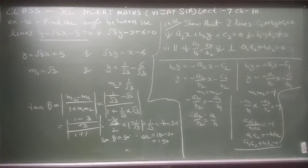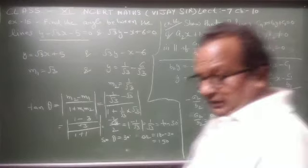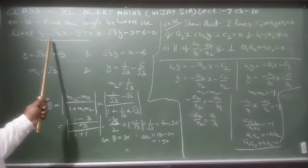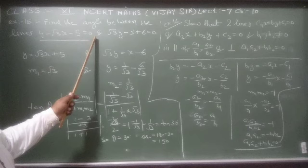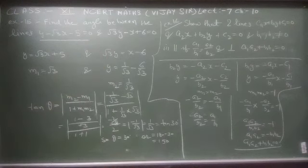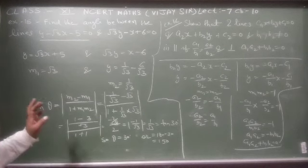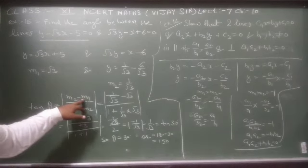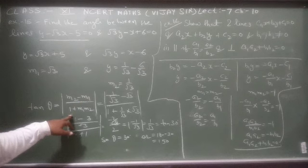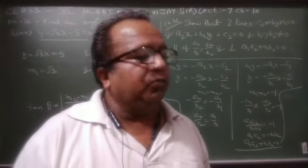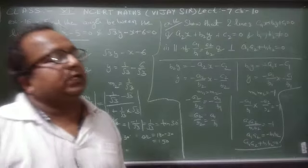Example 15: Find the angle between the lines y - √3x - 5 = 0 and √3y - x + 6 = 0. दो lines के बीच angle find करने के लिए formula है: tan θ = |m2 - m1| / (1 + m1·m2)। इसके लिए पहले दोनों lines का slope निकालना होगा।